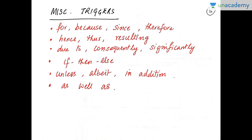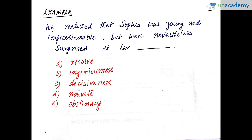There are other miscellaneous triggers — again, take a screenshot of these: 'because,' 'since,' 'unless,' 'albeit,' 'in addition,' 'as well as.' These are other miscellaneous ones and you can look at them at leisure.